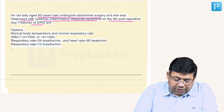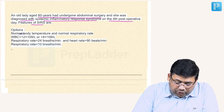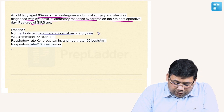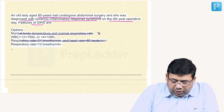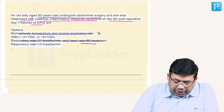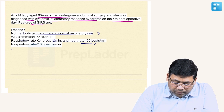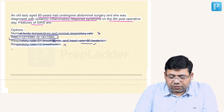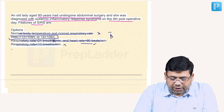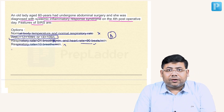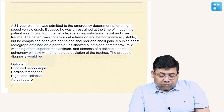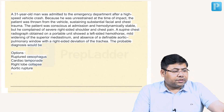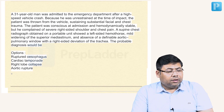Looking at this question, it is a very easy question. Normal body temperature — this is wrong. Respiratory rate more than — this is partially right but still wrong. This option is also wrong. WBC more than 12,000 or less than 4,000 — option B is the correct option.